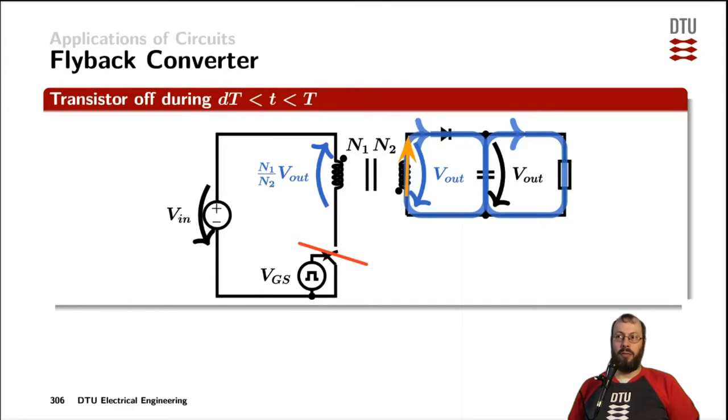To charge the capacitor and provide the load with the energy it needs. As the diode is a perfect short circuit, we have the voltage of the output capacitor also across the secondary side of the transformer, and that voltage is now applied from the non-dotted end towards the dotted end.